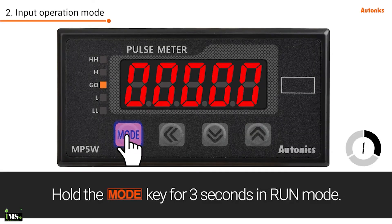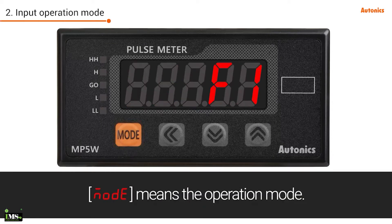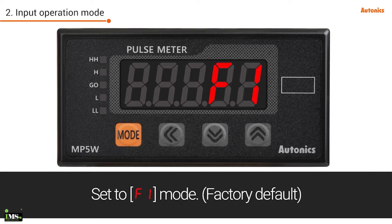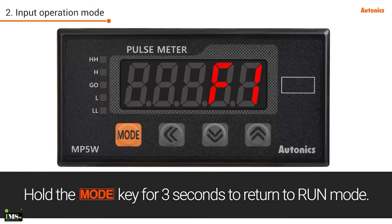Hold the mode key for 3 seconds in run mode, then press the mode key. Mode refers to the operation mode. Set to F1 mode. F1 mode is for measuring frequency, revolution, and speed. Hold the mode key for 3 seconds to return to run mode.